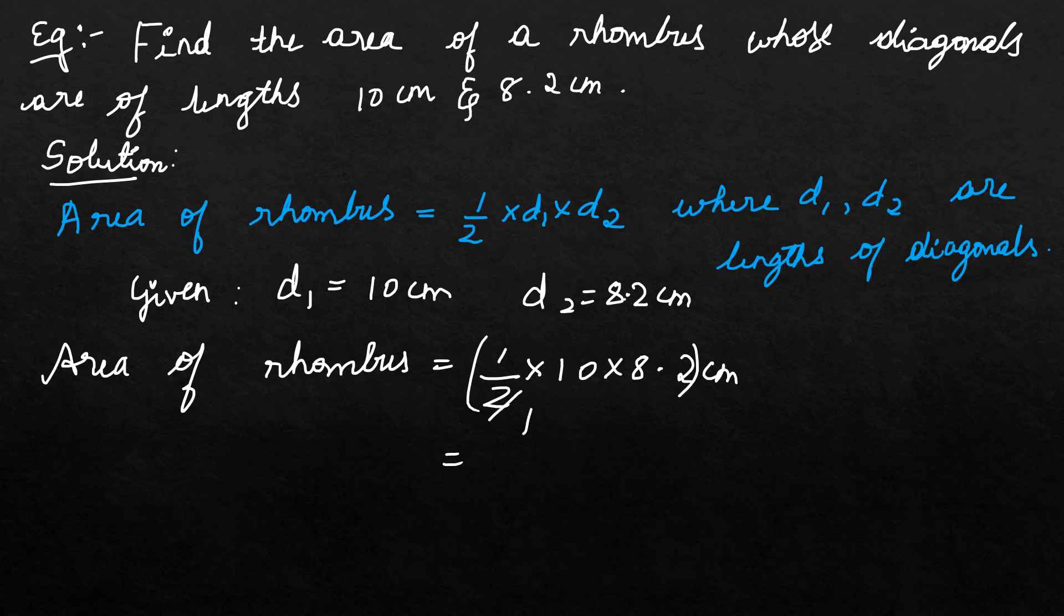Area of a rhombus is equal to half into 10 into 8.2 cm. That is equal to 5 into 8.2. 5 times 8 is 40, plus 1 is 41. Point after one digit, 41 cm square. Area unit is cm square. 41 cm square.